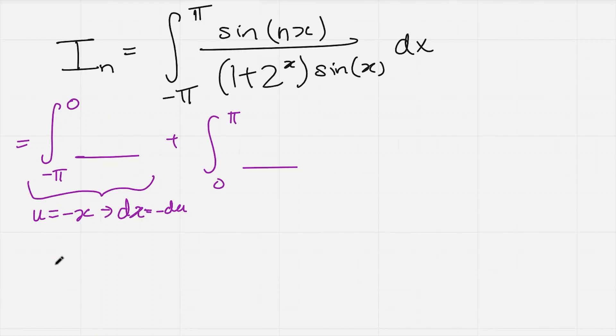And now I can just go ahead and plug everything in. So my integral, well, when x is minus pi, u is going to become pi. When x is zero, u is going to become minus zero, which is zero. And then my integrand is just this thing here. Sine of nx will become sine of minus nu. But because sine is odd, I can bring the minus sign to the front. So it just becomes minus sine of nu.